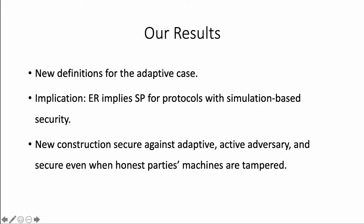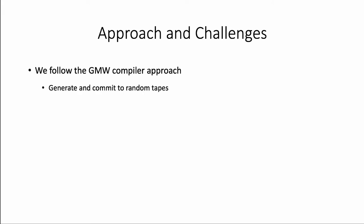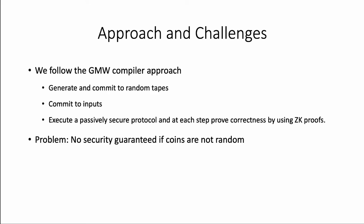We also give a new MPC construction that is secure against an adaptive and active adversary. Our construction follows the general approach of the GMW compiler, which has three steps. First, the parties generate and commit to a random tape. Then they commit to their inputs, and finally they execute a passively secure protocol, at each step proving correctness using some zero-knowledge proof. One problem is that there is no guarantee of security if the random tapes are not random. In the GMW compiler, each party contributes to the random tapes of every other party, so that if at least one party is honest, then the tapes of all parties, including corrupt ones, are guaranteed to be random.